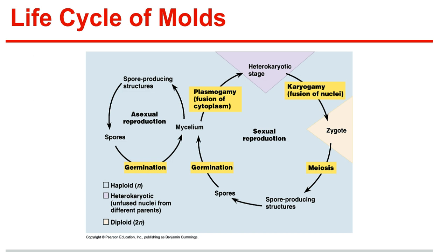Life cycle of molds: during sexual reproduction of bread mold, hyphae from two different mating types form a gametangia, which is a gamete-forming structure. The gametangia fuse, and zygotes form within a zygospore. The zygospore develops a thick wall and can remain dormant for long periods. It eventually germinates and a sporangium emerges, which reproduces asexually by releasing haploid spores produced by meiosis.